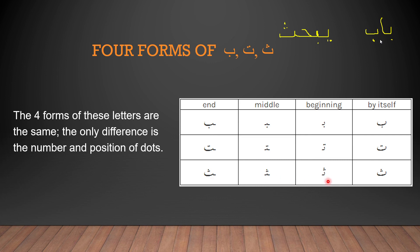We see that dots are very important in the Arabic language. The only difference you can see between Ba, Ta, and Sa in any form is the dots. Ba has only one dot below, Ta has two dots above, and Sa has three dots above. These dots are very, very important for the Arabic language.